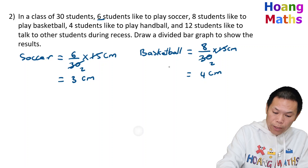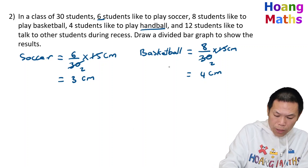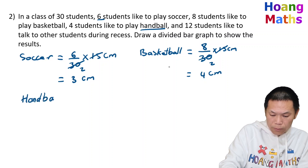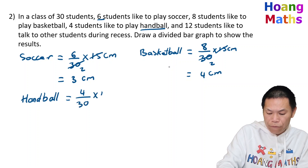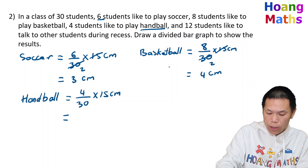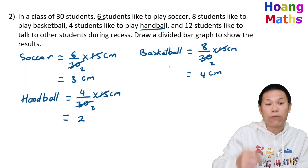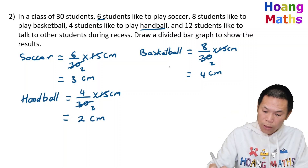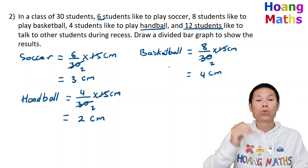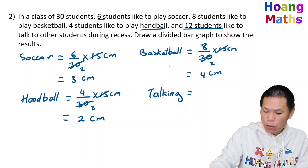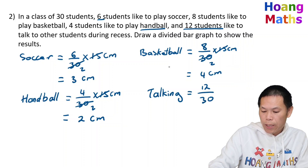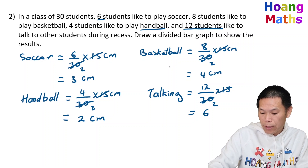For handball: 4 students, so 4 over 30 times 15 centimeters. Fifteen divided by 30 gives 2, and 4 divided by 2 is 2 — so handball is 2 centimeters. For talking: 12 students, so 12 over 30 times 15. That cancels to give 2, and 12 divided by 2 is 6 — so talking is 6 centimeters.